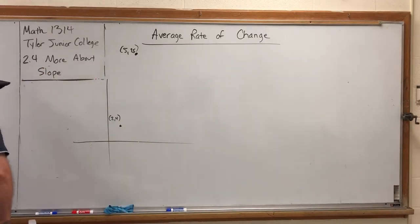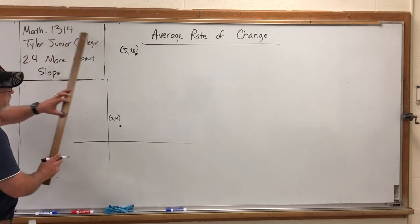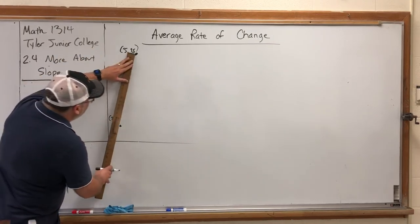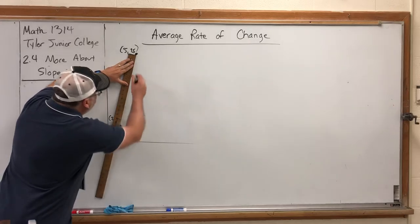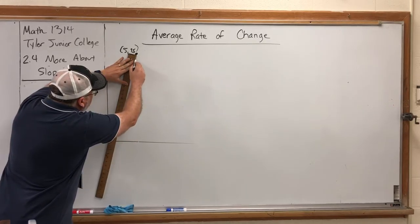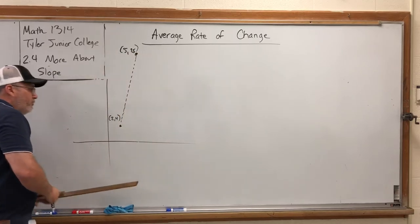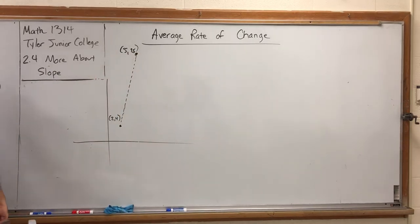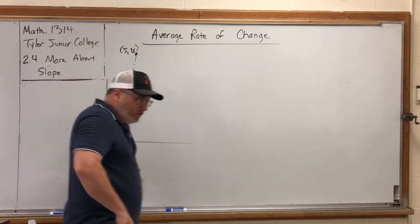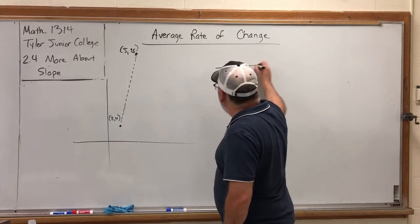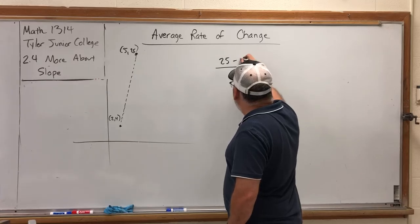So in this section, average rate of change, you might think rate of change means we're doing exactly the same thing. In a sense, we kind of sort of are. On the board, you see two points, (2,4) and (5,25), makes for a pretty steep line. If I ask you, what's the rate of change, hopefully you're thinking, well, you're just asking me for the slope.